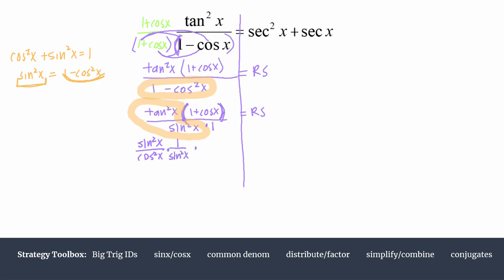And of course we still have that 1 plus cosine x term out over here. We'll put it over 1 just to remind ourselves where everything should be. And of course all this equals the right hand side.